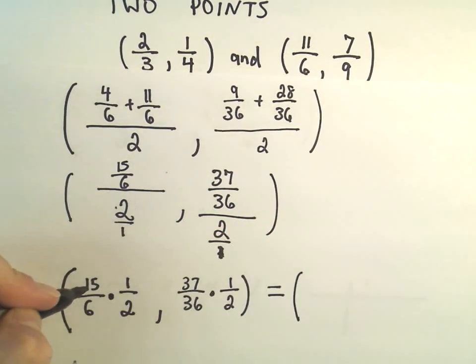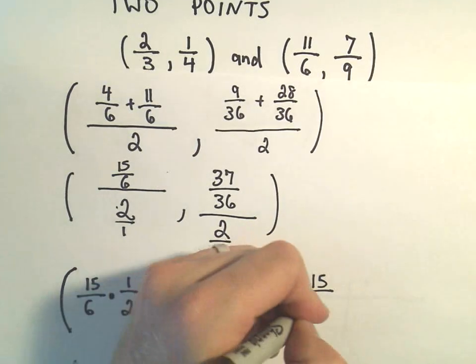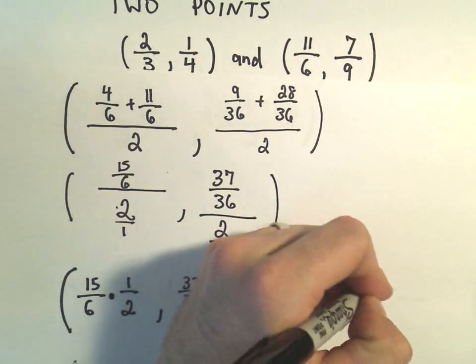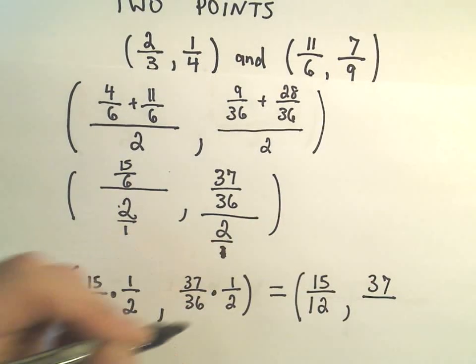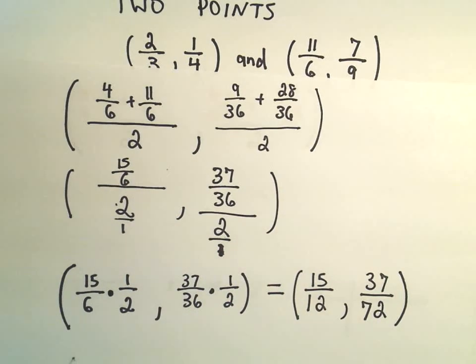So the numerator, so the midpoint, we would get 15 on top, 12 on the bottom, that would be our x coordinate, and then we would have 37 times 1 over 36 times 2, which is going to be 72. And now we've found the midpoint of our original two points.